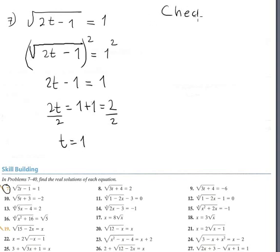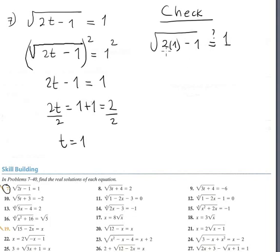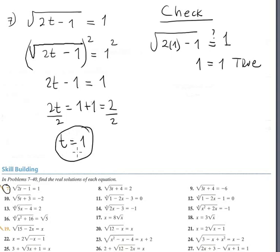In radical equations, checking is mandatory. Plugging back in: 2 times 1 minus 1 should equal 1. It's obvious that 2 times 1 is 2, minus 1 is 1, and square root of 1 is 1. So 1 equals 1 is true — the solution t equals 1 is perfect.